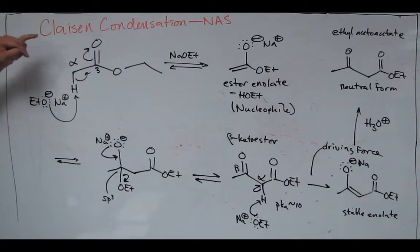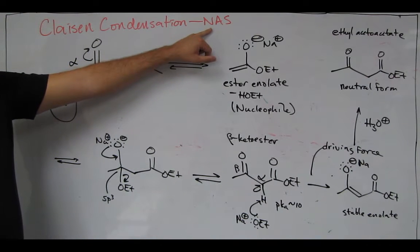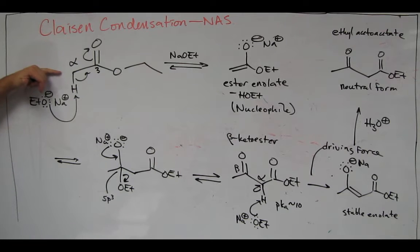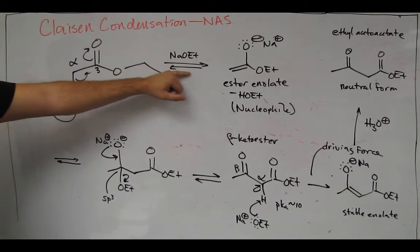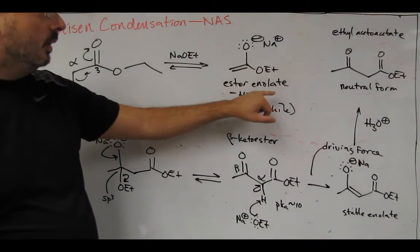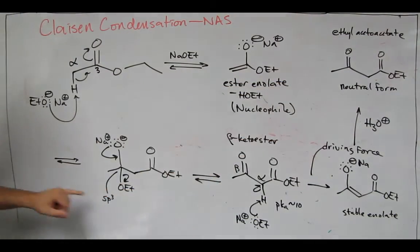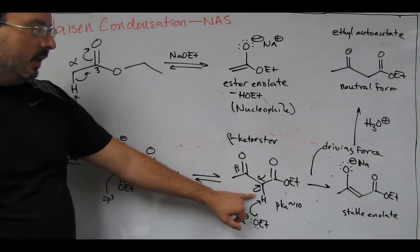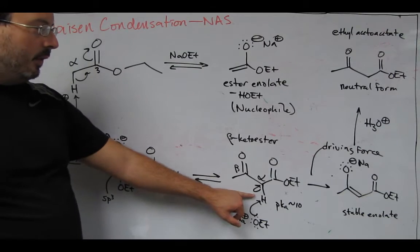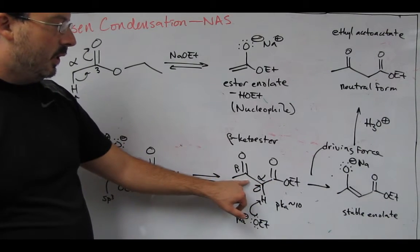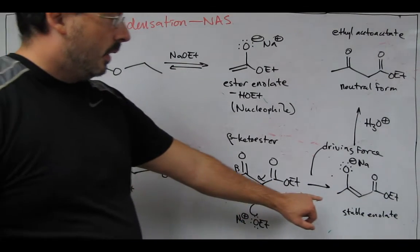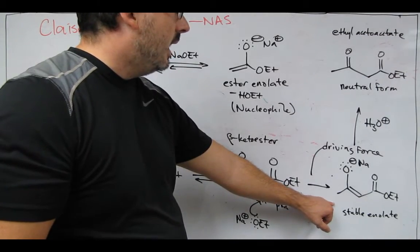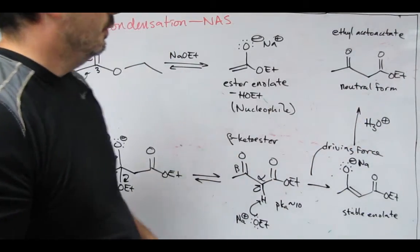This has been a Claisen condensation, reviewing nucleophilic acyl substitution, the concepts of alpha acidity, and equilibrium. This is the nucleophilic acyl substitution at this stage here. The sp3 carbon breaks down. We get the beta-ketoester. We have increased acidity at this alpha carbon due to the 1,3 relationship of the carbonyls. Our stabilized enolate sits at this stage until we work up to get the neutral form.